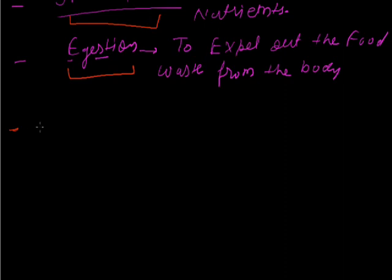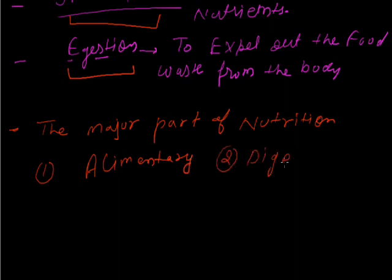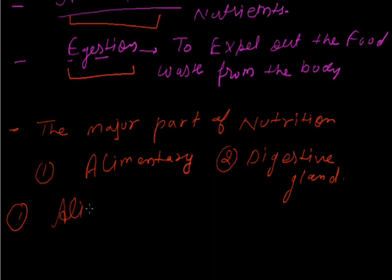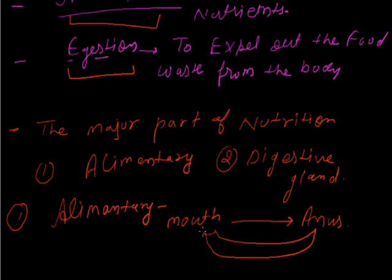Now we move to the entire process of nutrition inside an animal's body. For developed animals like humans, there are two important working parts for nutrition: first, the alimentary canal, and second, the digestive glands. The alimentary canal is a kind of pipe which is the site of digestion inside the human body, running from the mouth all the way to the anus.